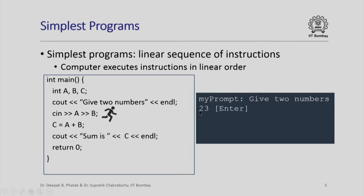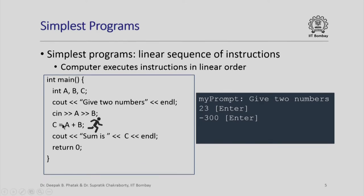The next instruction the computer executes is the reading of the values of a and b. It is waiting for the user to input those values from the keyboard. Perhaps the user enters 23 and presses Enter, giving the computer only the value of a. The computer is still waiting, so the user then enters minus 300 and Enter — now the computer has read the values of both a and b.